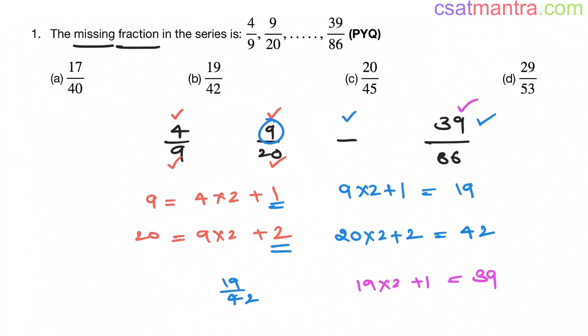Denominator, 42 into 2 plus 2, that is 84 plus 2. This is equal to 86. Yes, it follows. So our answer is B my friends.